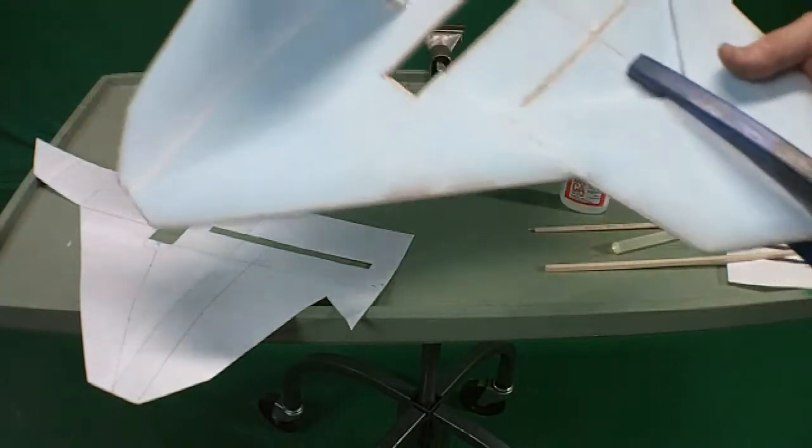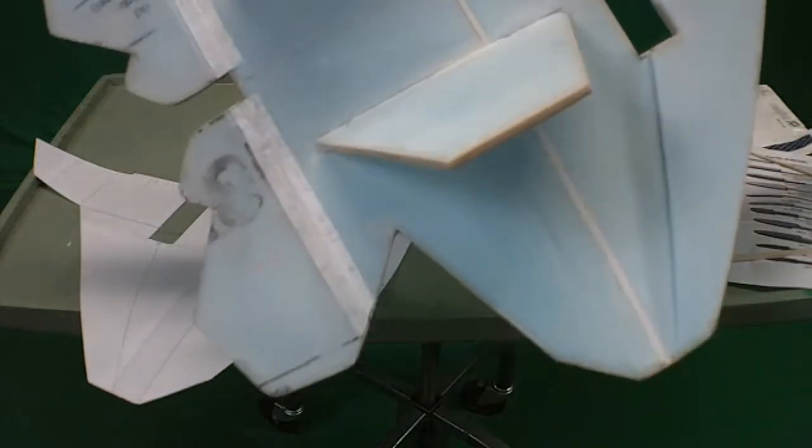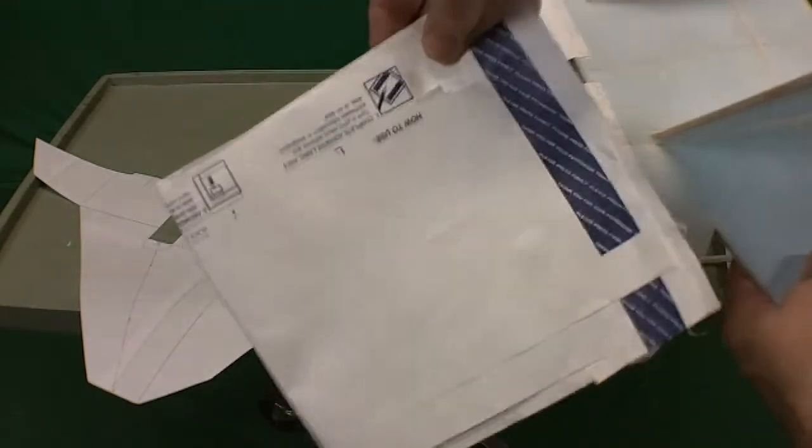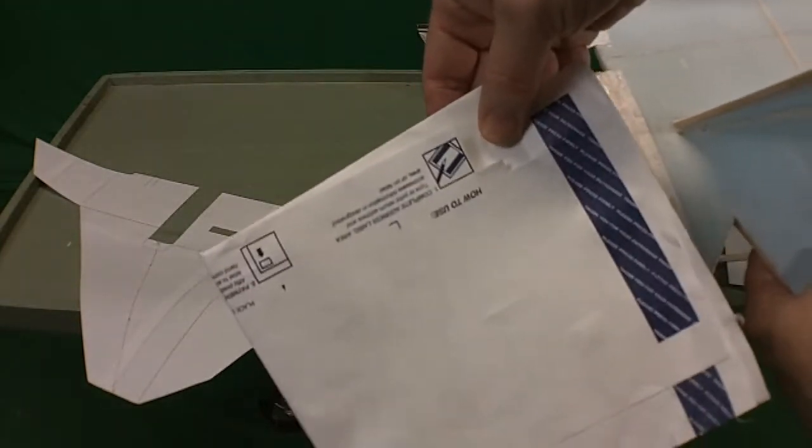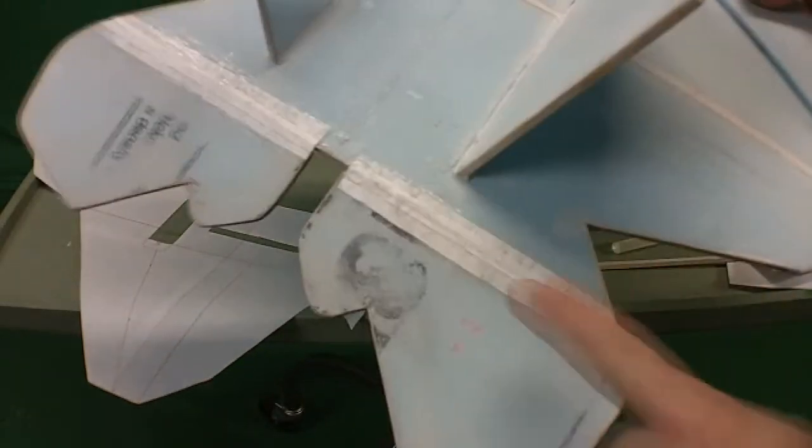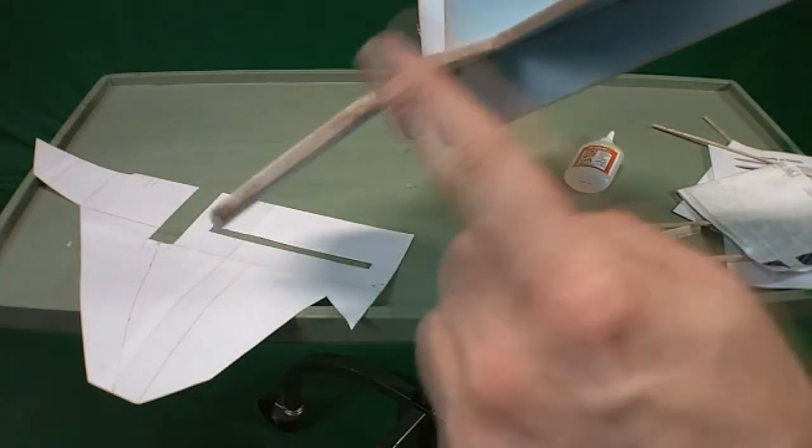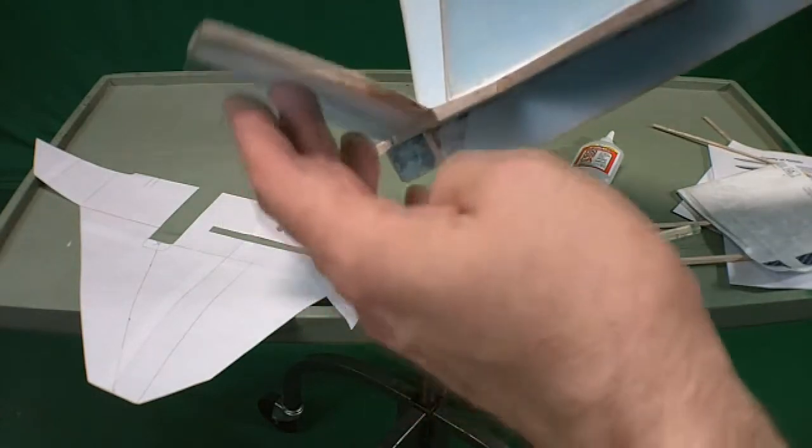Another interesting thing that people may or may not know is to make hinges pretty inexpensively, very strong, you can go to the post office and they have these mailing envelopes and all you do is cut a half inch strip and glue it on with the instant glue after you've made the 45 degree miter. In this case I've got balsa wood on the foam as I said.